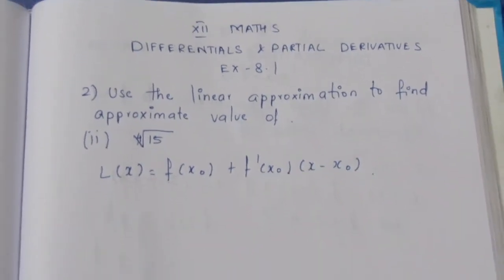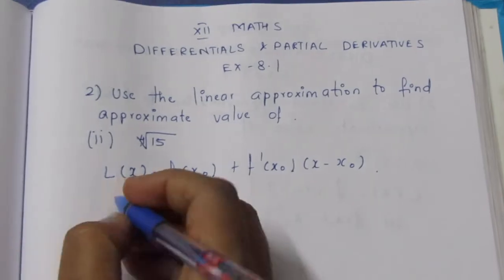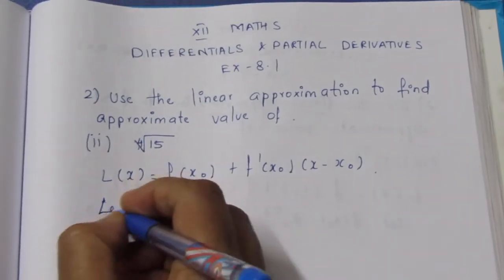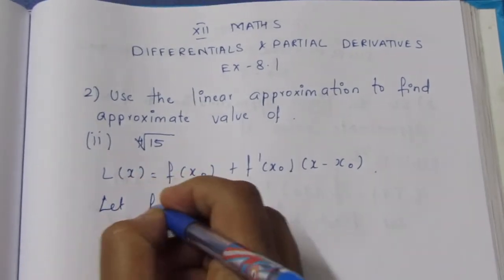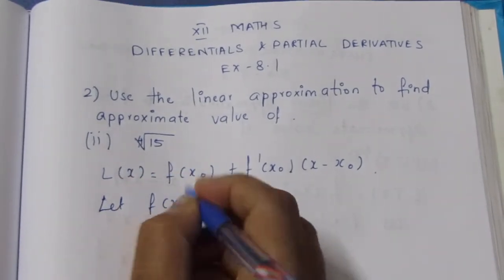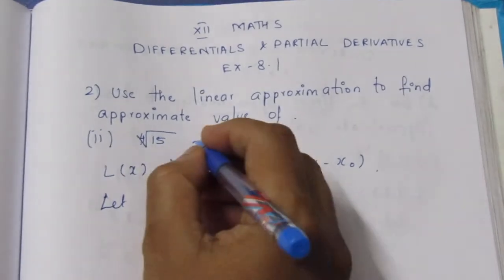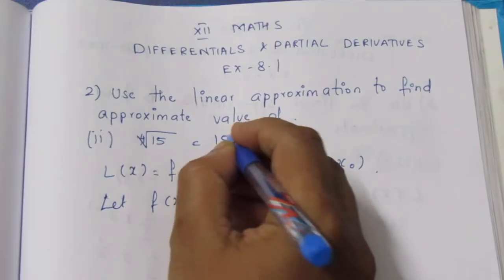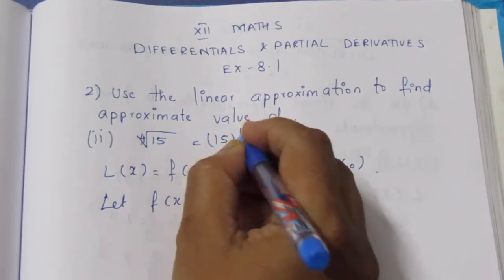So let f of x equal x to the power 1 by 4, which is the 4th root function.